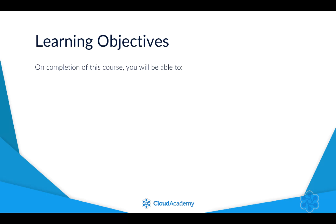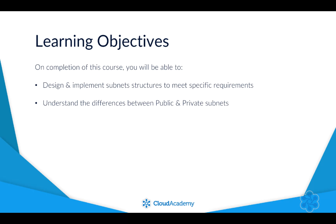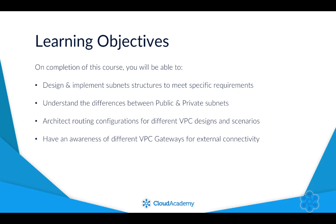Once you have completed this course, you will be able to design and implement an effective subnet structure within your VPCs ensuring they meet specific requirements for your solutions. You'll understand the differences between public and private subnets, and you will have the ability to architect successful routing configurations for your different VPC designs for both internal and external connectivity options. You'll also have an awareness of different VPC gateways for external connectivity.